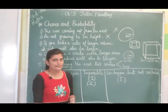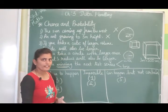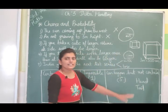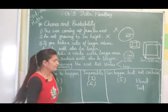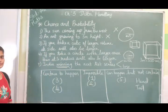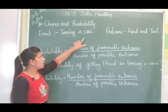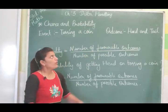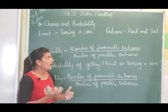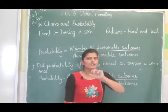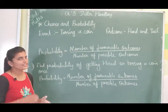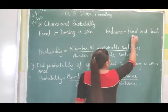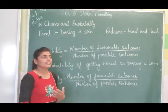Tossing a coin — whatever action you perform is called an event. After tossing a coin, what you get as a result is called the outcome. The possible outcomes are head and tail — two possible outcomes. Whenever you toss a coin, you will get either a head or a tail. You cannot get both together. Whatever result you get after performing the event is called an outcome.